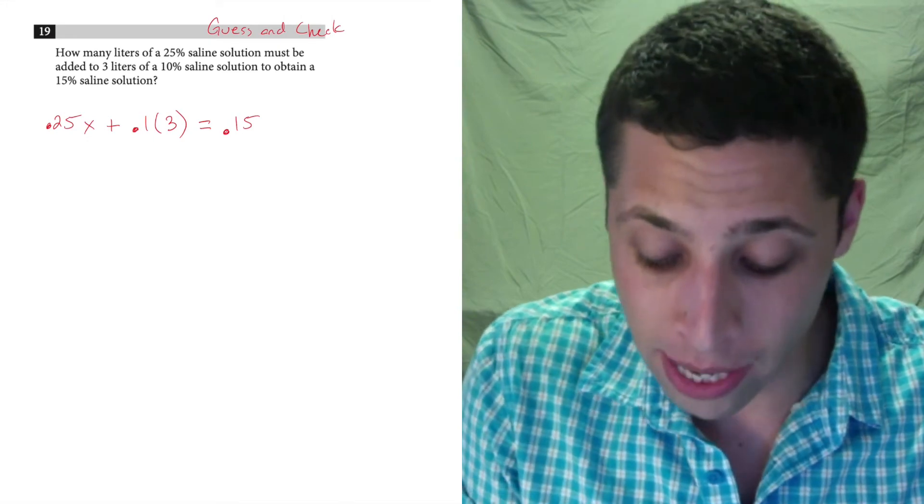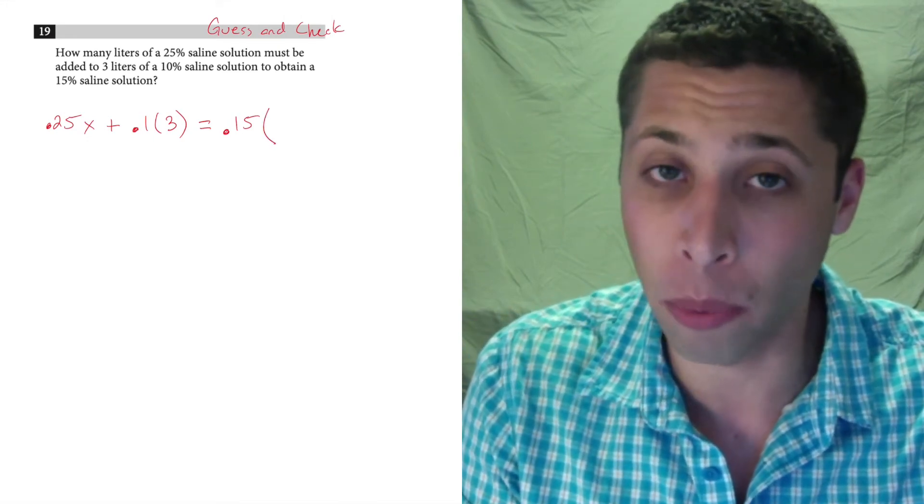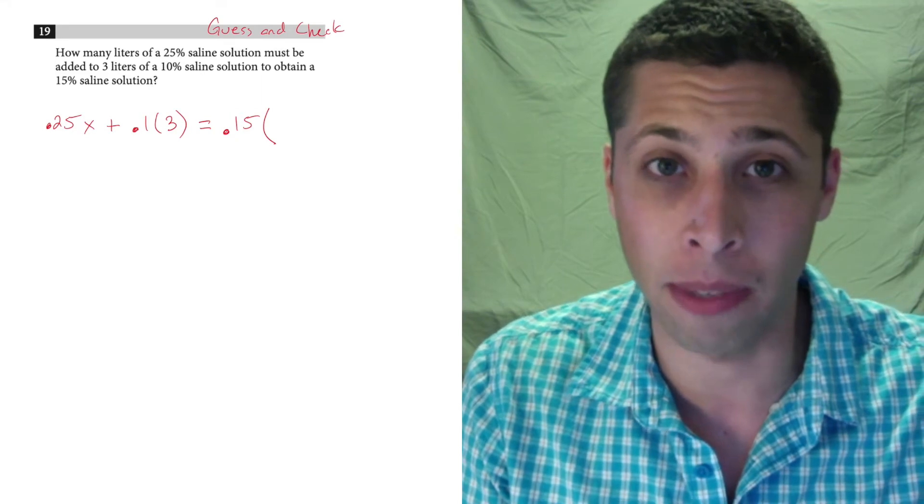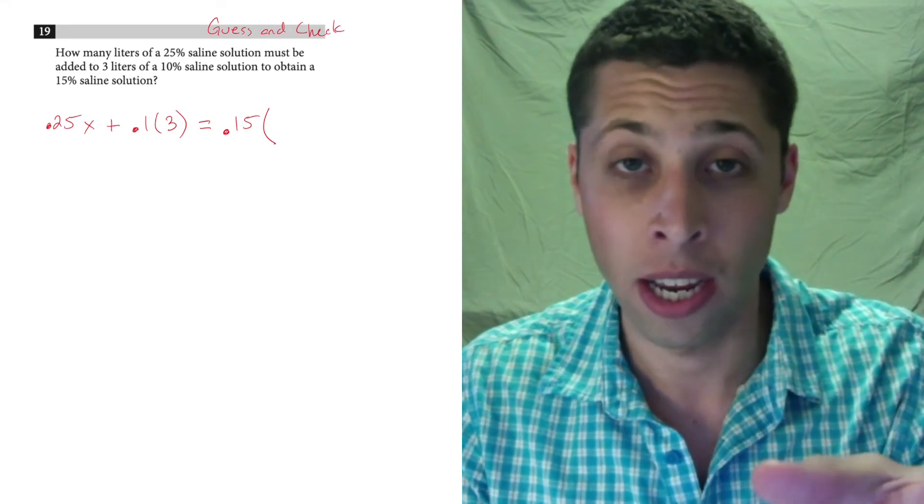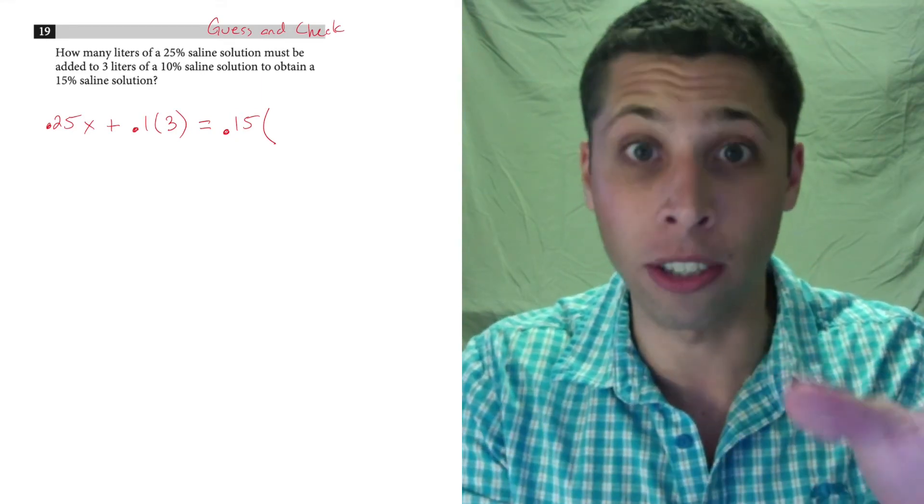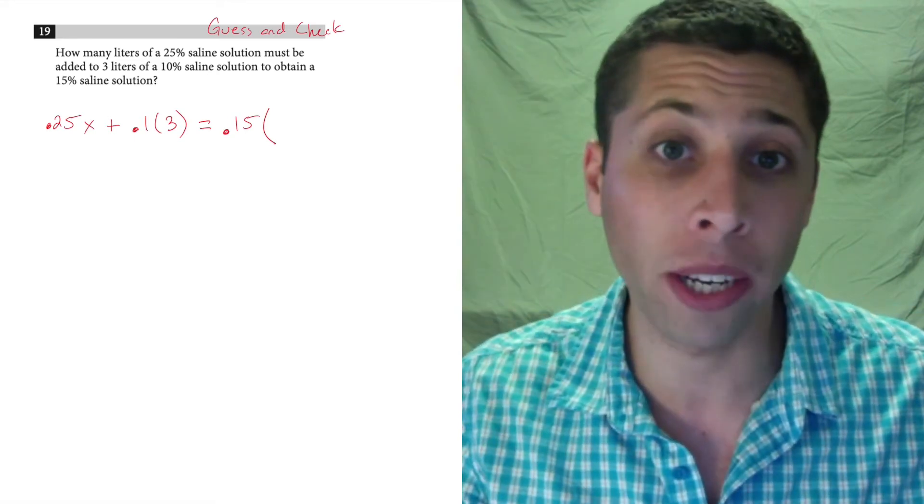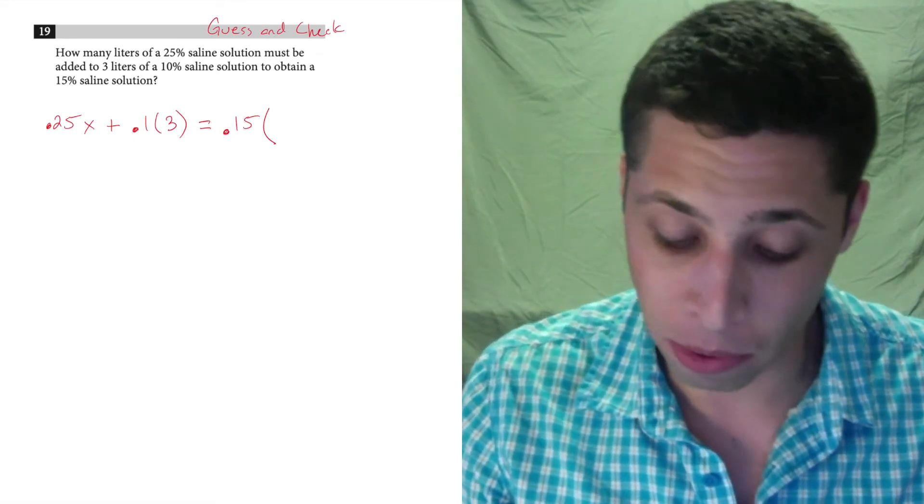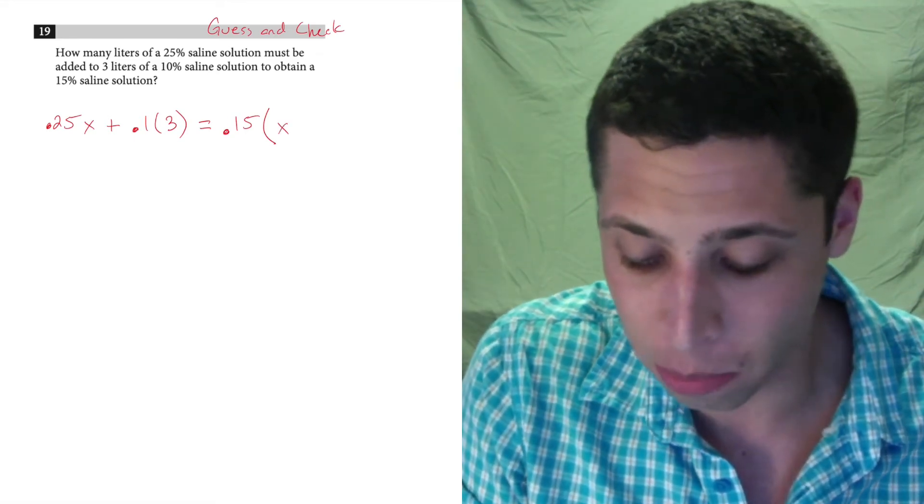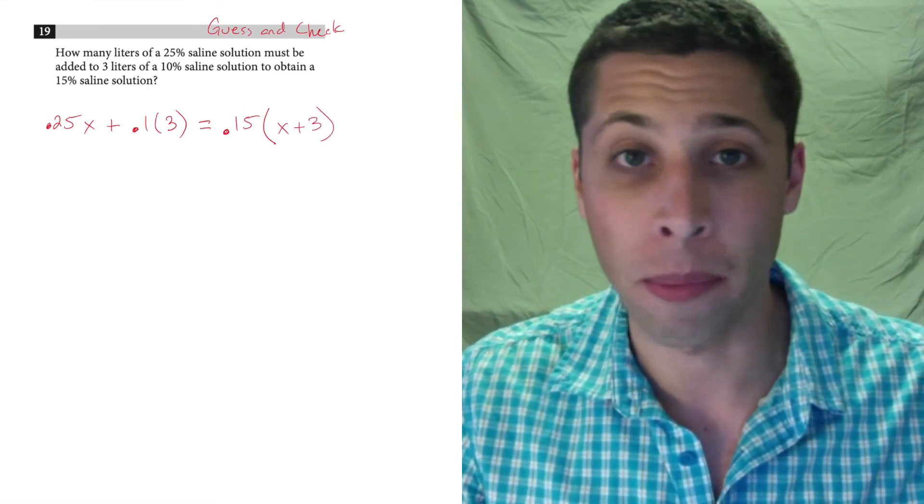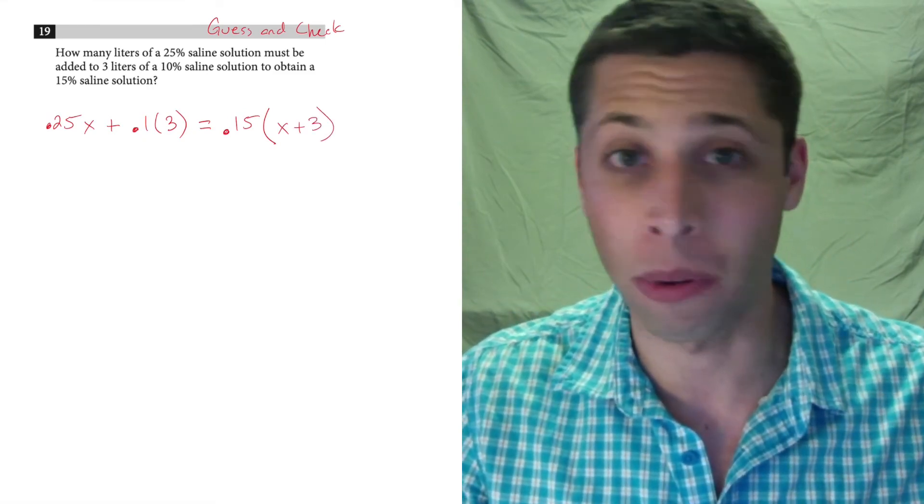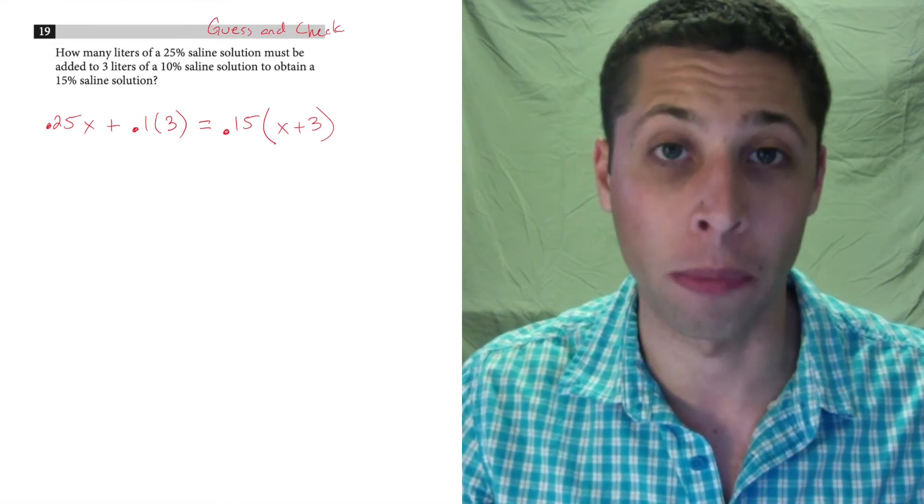So it's complicated. I don't know a shortcut or a clever way to remember this other than to realize that if I'm taking a certain number of liters, or taking three liters, and then adding some other amount to it, that's another addition problem. So this is going to be x plus 3. However many liters we're adding, plus the three we had originally, that's the total number of liters.